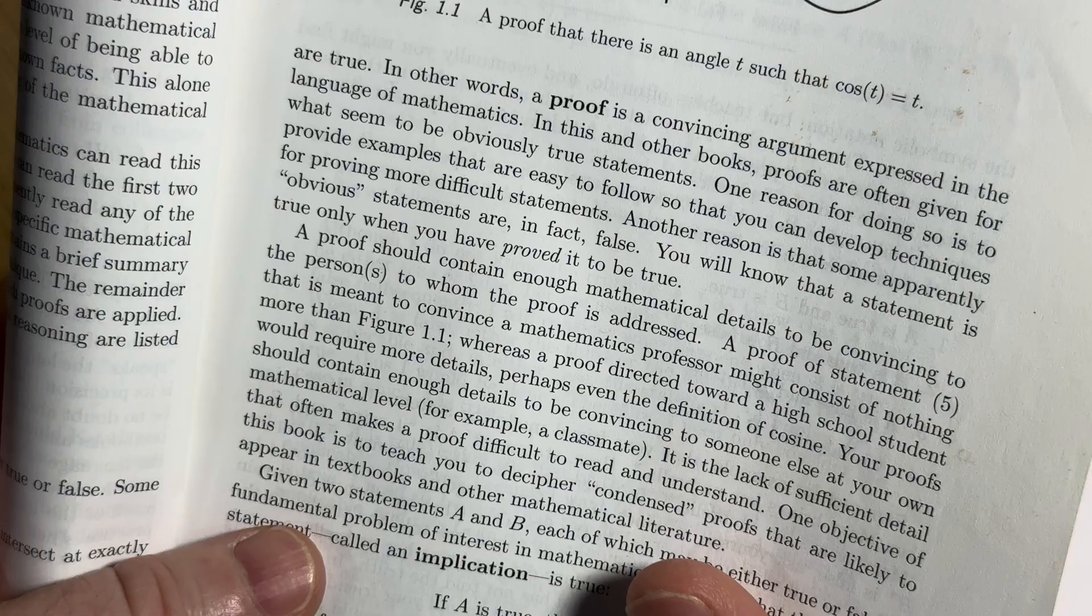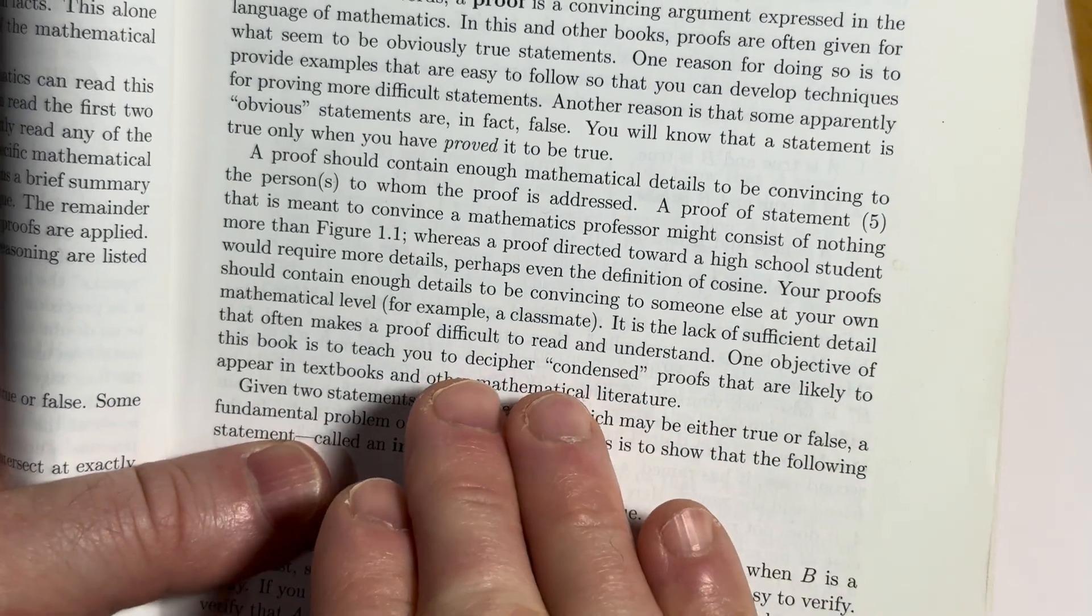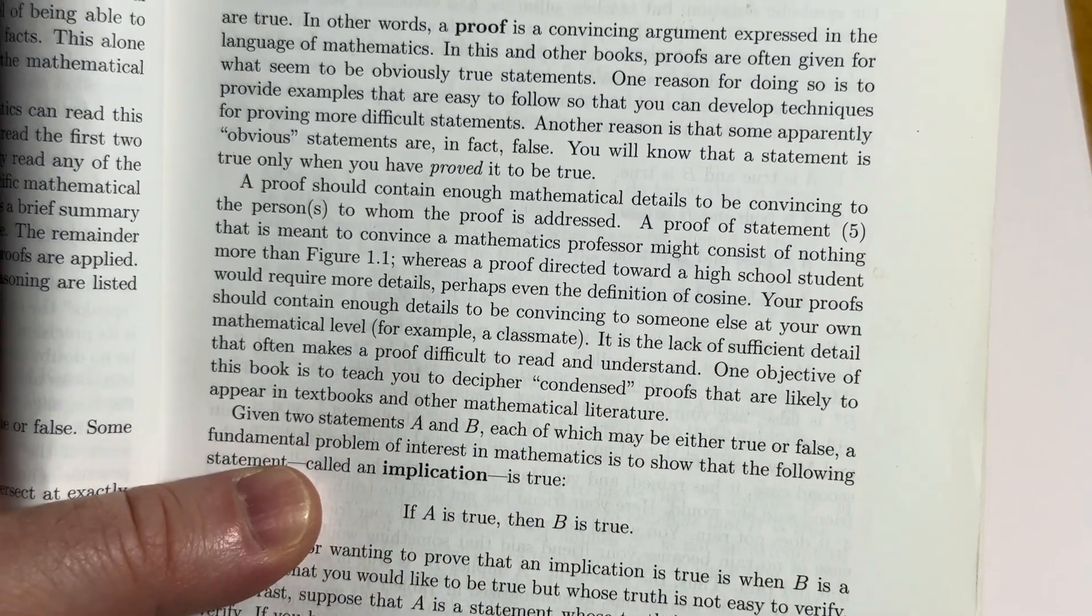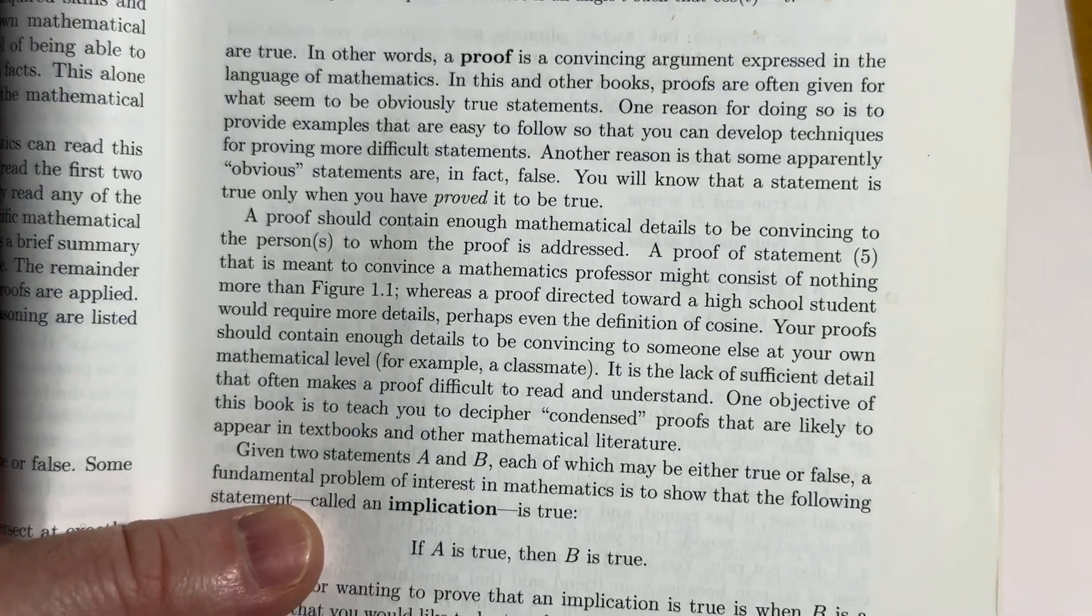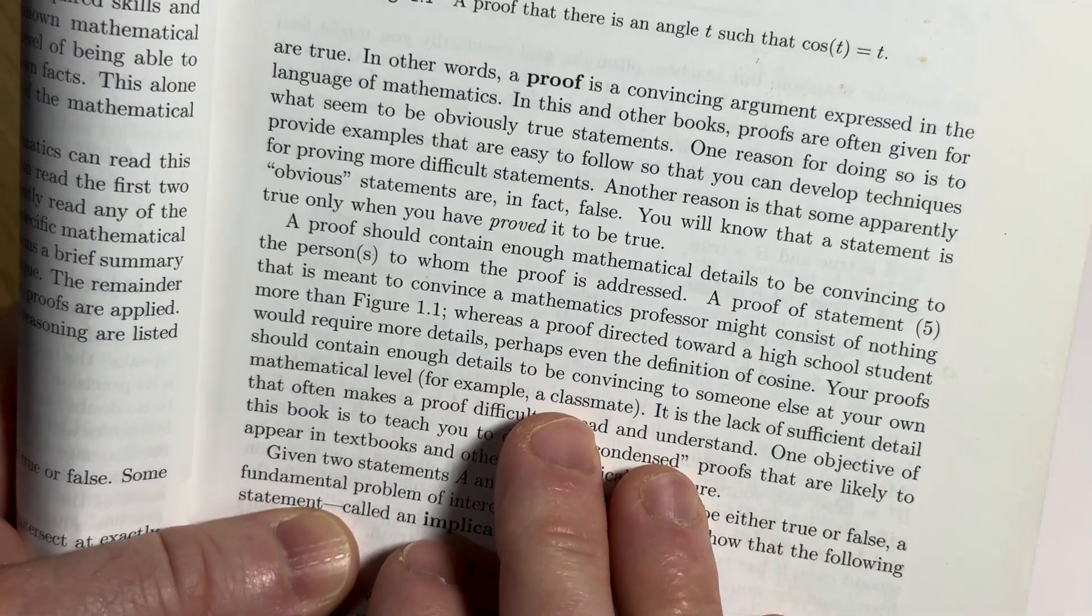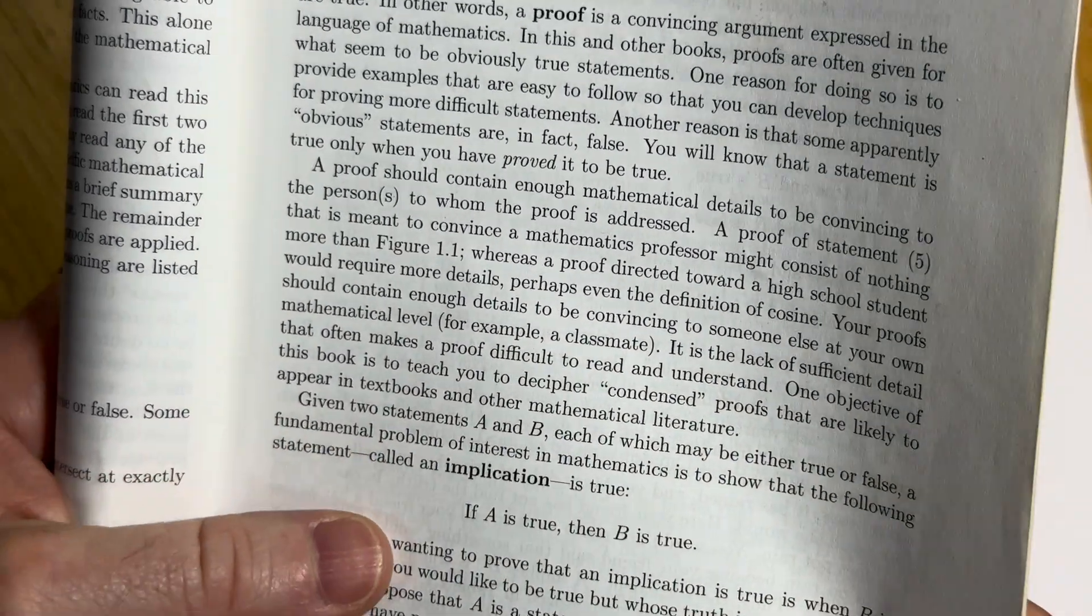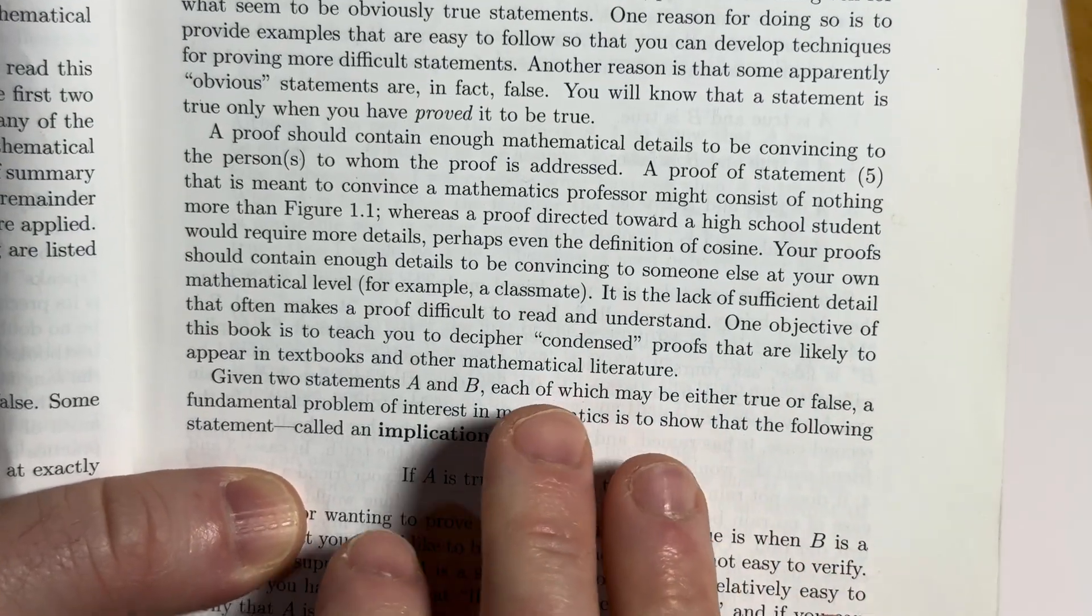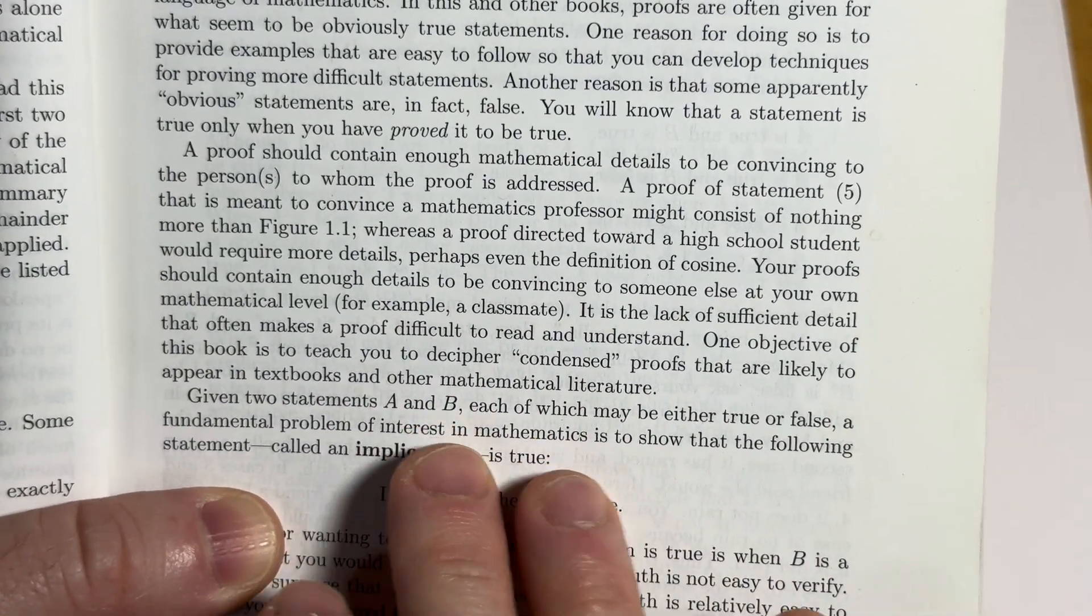One objective of this book is to teach you to decipher condensed proofs that are likely to appear in textbooks and other mathematical literature. You know, if you pick up a copy of like Rudin's Principles of Mathematical Analysis, you'll notice that he just starts with like, let epsilon be greater than zero, choose delta to be the minimum of these three crazy quantities, let's go. And he never explains where things come from. So you have to be able to decipher those things.